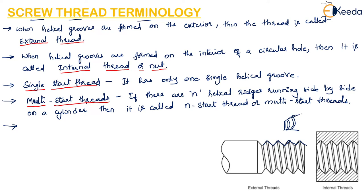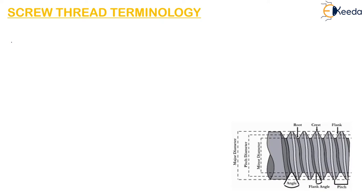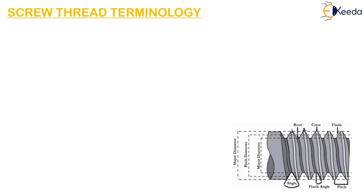This is called a conical thread. The bottom of the groove in between the two ridges is called the root. So this is one ridge and this is the second ridge, and the bottom in between the two ridges is called the root.